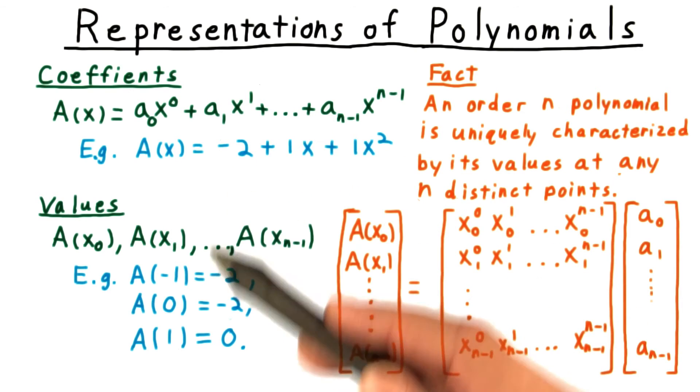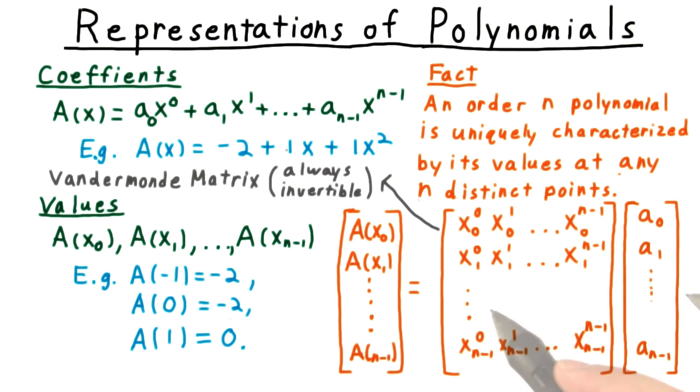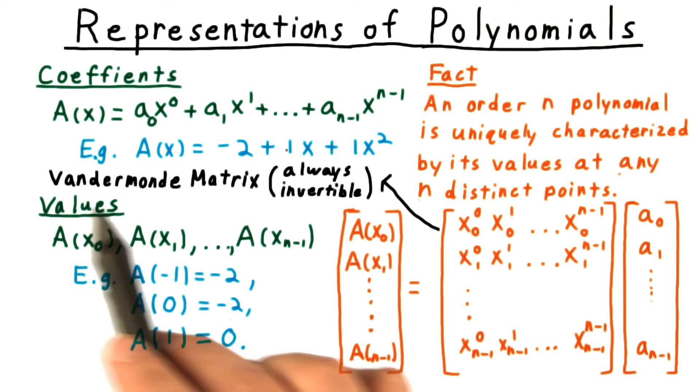Going from the coefficient representation to the value representation can be thought of as matrix multiplication. To calculate A at some value, I take the dot product of the corresponding row of the matrix consisting of the powers of the argument x, with this column consisting of the coefficients of the polynomial A. This matrix is important enough that it gets its own name, and is called a Vandermonde matrix.